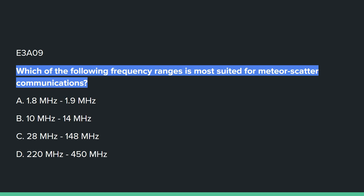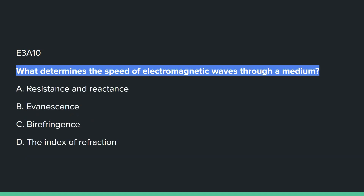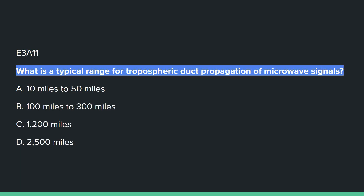E3A09: Which of the following frequency ranges is most suited for meteor scatter communications? E3A10: What determines the speed of electromagnetic waves through a medium? D: the index of refraction. E3A11: What is a typical range for ionospheric duct propagation of microwave signals? It's B: 100 miles to 300 miles.